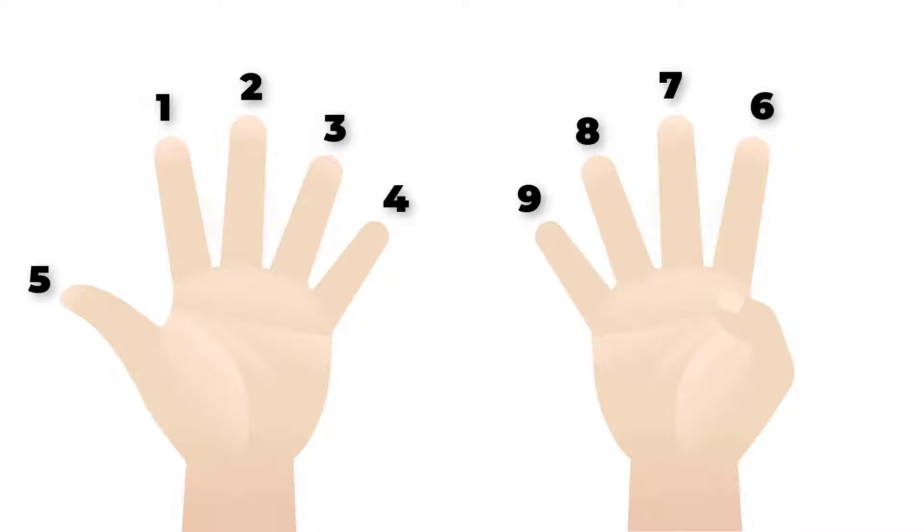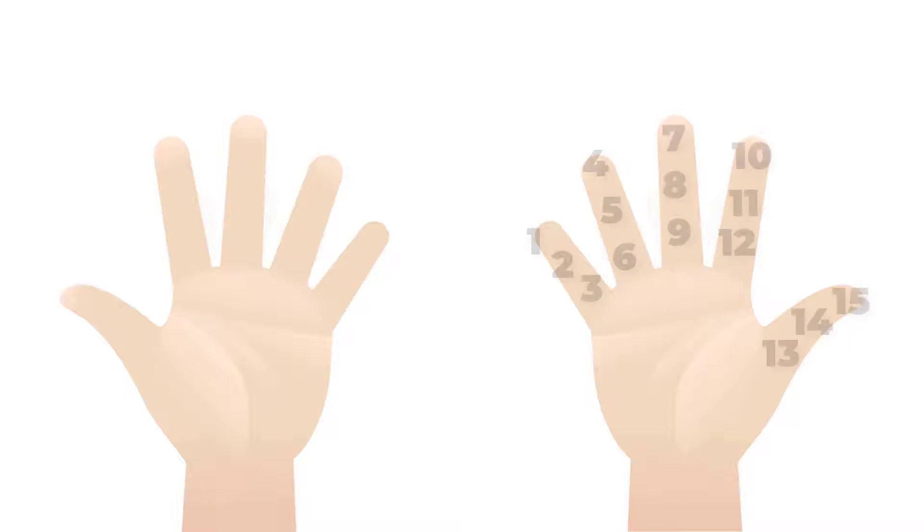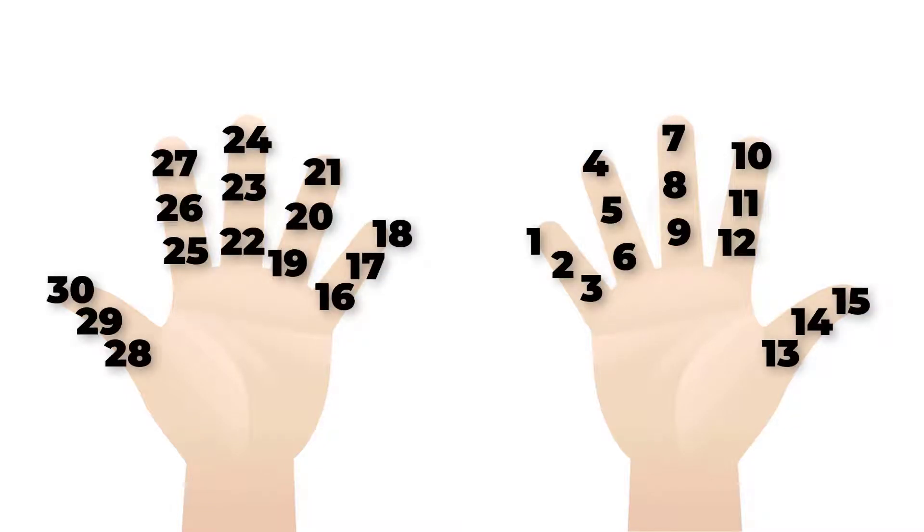But you may also divide each finger into three. Take a look at your palm. Each finger, including your thumb, has three partitions. Using each partition, we can now count up to 30.